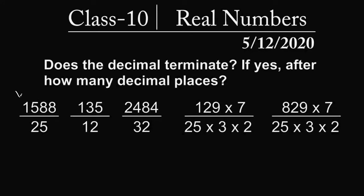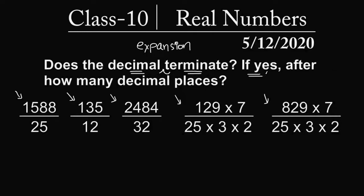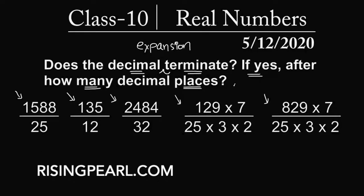We are given different rational numbers, and the question is: does the decimal expansion terminate? When we carry out the long division, will the decimal expansion terminate? That's the first part of the question. The second part is: if they do terminate, can we tell after how many decimal places? Let's go ahead and find out how we answer these questions.